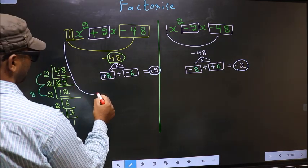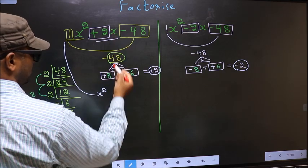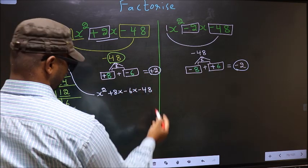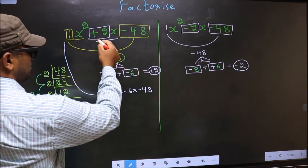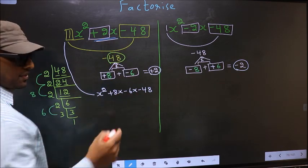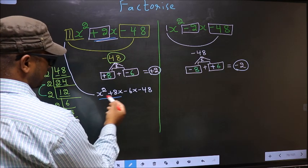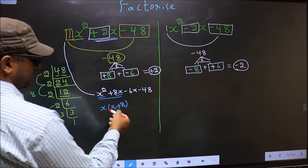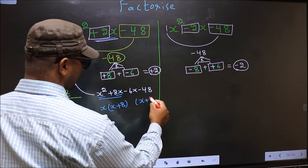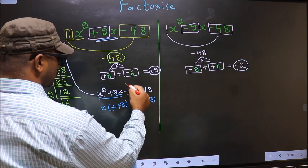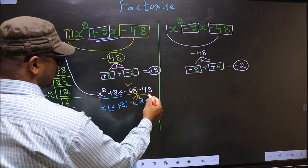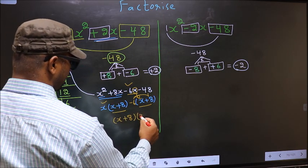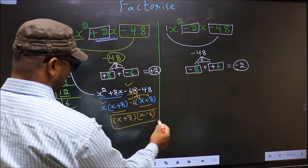Now for the first expression, change it to x squared. In place of plus 2x, we write plus 8x minus 6x, giving x squared plus 8x minus 6x minus 48. From the first two terms, take out x common: x(x plus 8). From the last two terms, minus 6 is taken out: minus 6(x plus 8). Now take out (x plus 8) common, giving (x plus 8)(x minus 6). This is the answer for the first one.